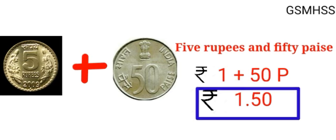When we write rupees together as numerals, we put a point between the amount in rupees and in paise. The number before the point tells us how many rupees, and the number after the point tells us how many paise.